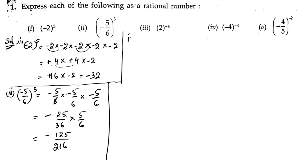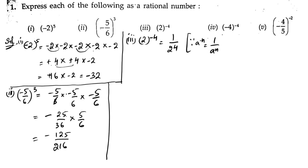Third bit: 2 to the power of minus 4. First of all, we need to remove the negative sign from the power. To remove it, we use the identity: a to the power of minus n equals 1 by a to the power of n. So we send this number to the denominator: 1 by 2 to the power of 4. So 2 into 2 into 2 into 2: 2 twos are 4, 4 twos are 8, 8 twos are 16. The answer is 1 by 16.